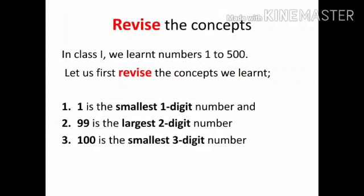Also, we learned that number 1 is the smallest one digit number, number 99 is the largest two digit number, and number 100 is the smallest three digit number.